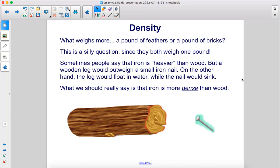This is a silly question since they both weigh one pound. Sometimes people say that iron is heavier than wood, but a wooden log would outweigh a small iron nail. On the other hand, the log would float in water while the nail would sink. What we should really say is that iron is more dense than wood.